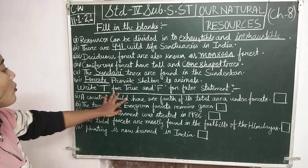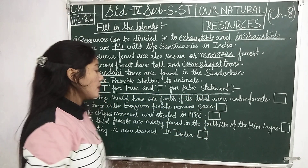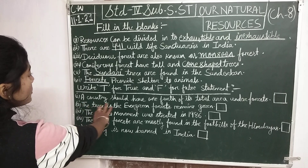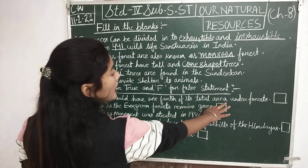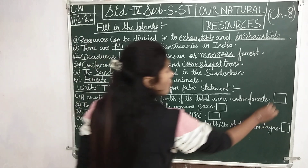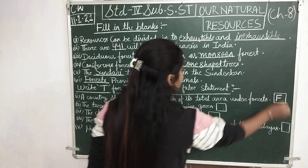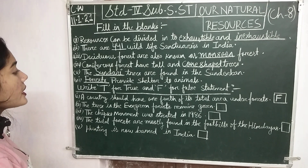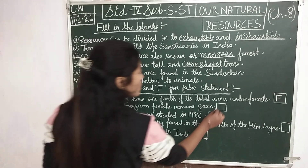Now, write T for true and F for false statements. Number 1: a country should have one-fourth of its total area under forest — it is false. Number 2: the trees in the evergreen forest remain green — it is true.